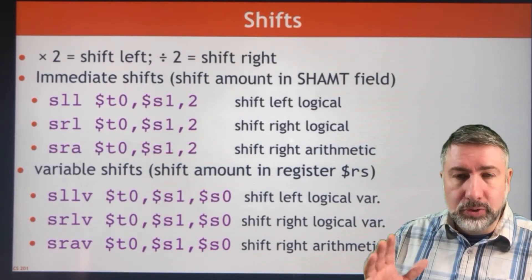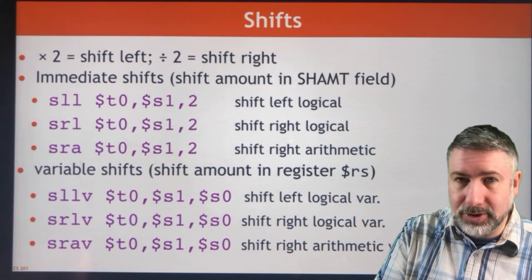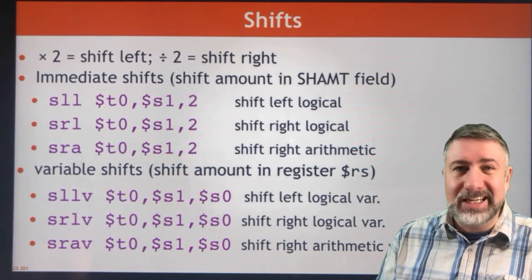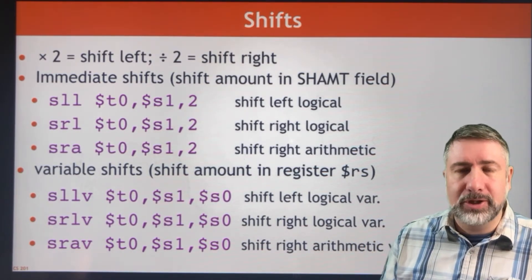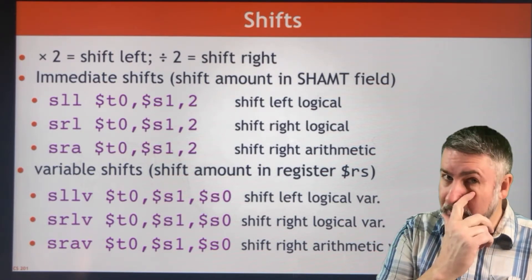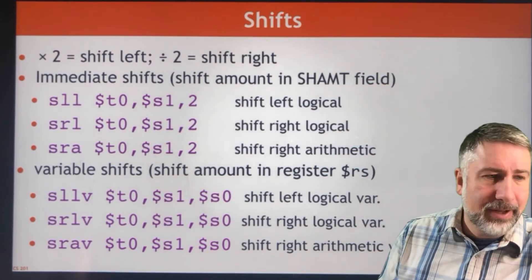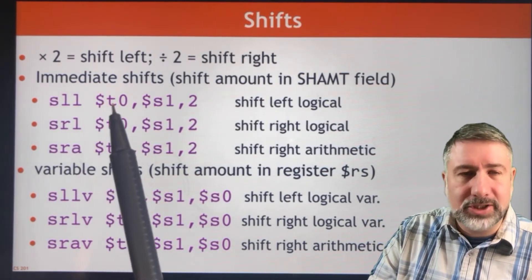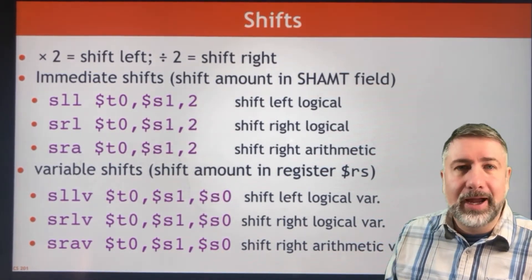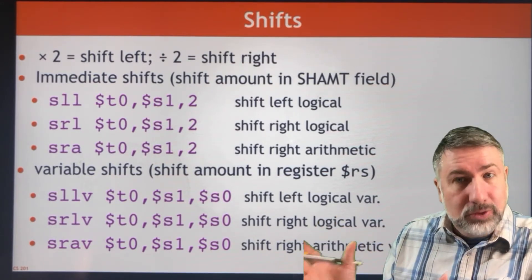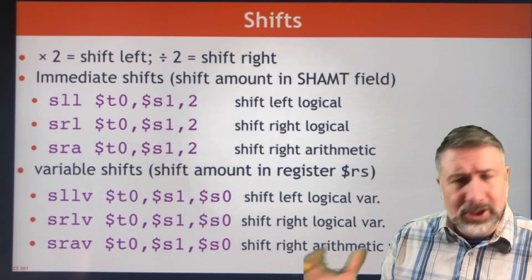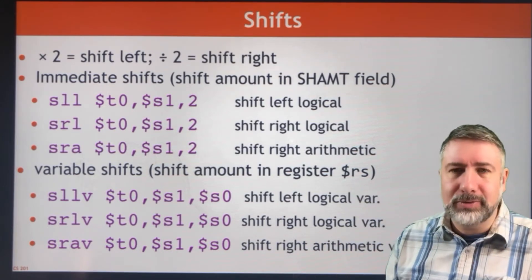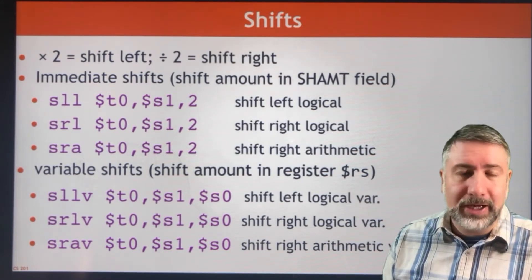Shift operations use the shift amount field or a register to store the amount to shift. So instead of just shifting one bit at a time, you can shift as many as 31 bits — from zero up to 31. It's a five-bit field, so it represents values from zero to 31. A shift left, for example, into T0 whatever's in S1 shifted by two would amount to a multiplication by two. In general, shifts are used to move information around, and you can use that feature to multiply and divide in certain circumstances.